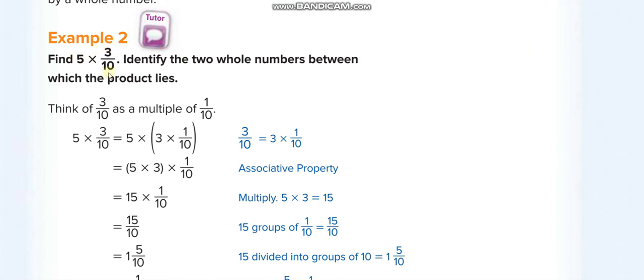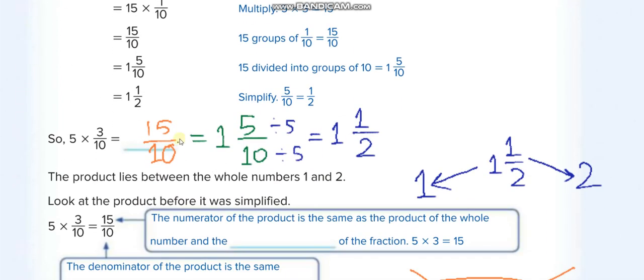5 times 3 over 10. You know that we just multiply with the numerator. 5 times 3 is 15, it will become 15 over 10. Here it is.